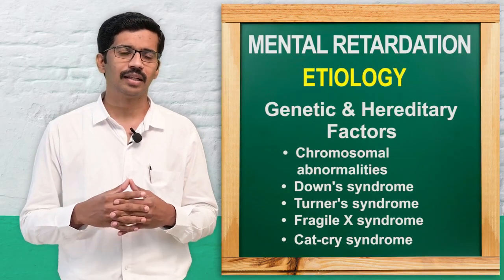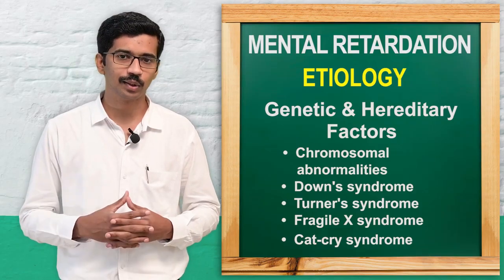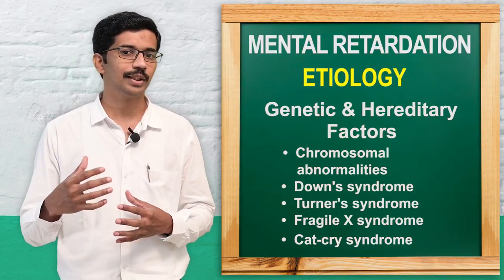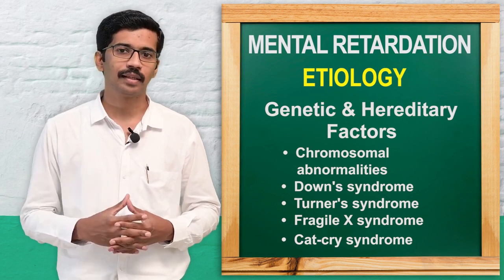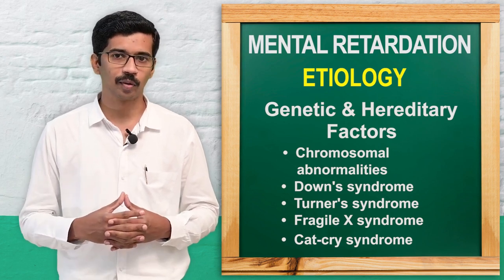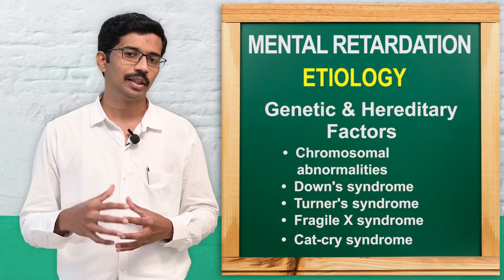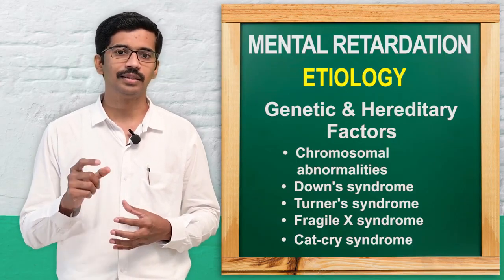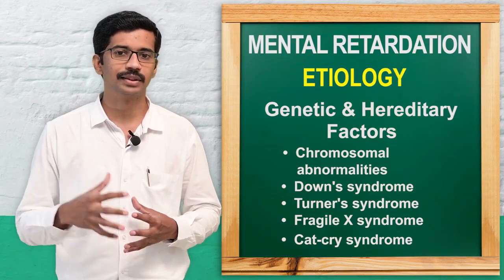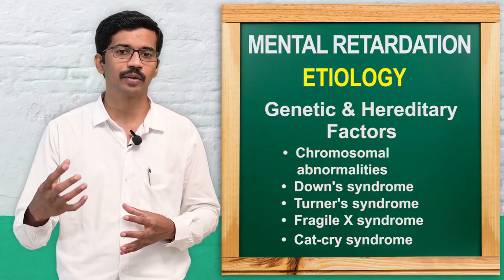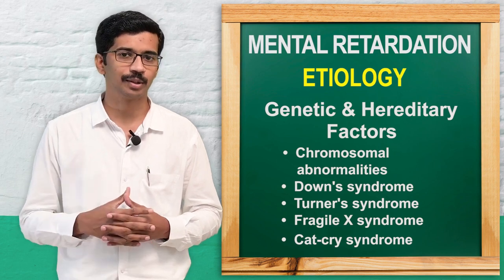Now we will see the etiological factors. The etiology may be biological, perinatal, and environmental factors. Under the biological factor, there are mainly genetic and hereditary factors. Through the genes, or if there is any chromosomal abnormality, mental retardation may occur.